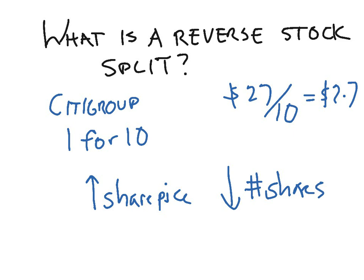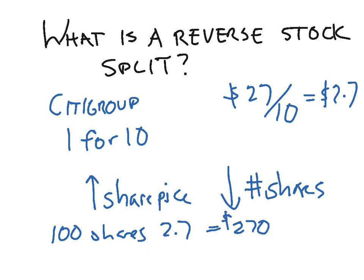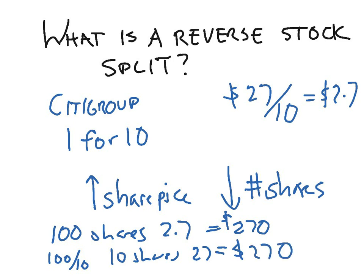What does this mean for you if you own the stock? Absolutely nothing. You're getting fewer shares, so the price goes up, but the net effect is the same. For example, if I owned 100 shares of Citigroup at $2.70, that means I would have $270 worth. After the reverse of 1 for 10, I would have 100 divided by 10 — 10 shares worth $27, or again, $270. The net effect is the same.